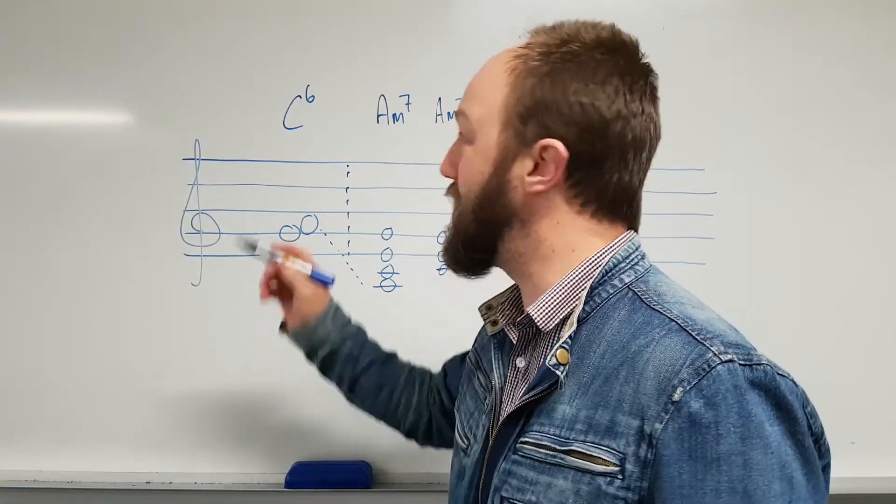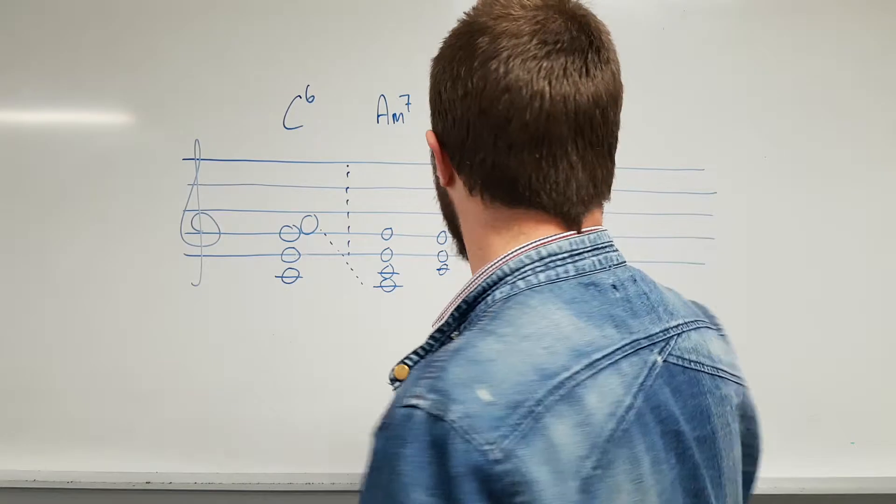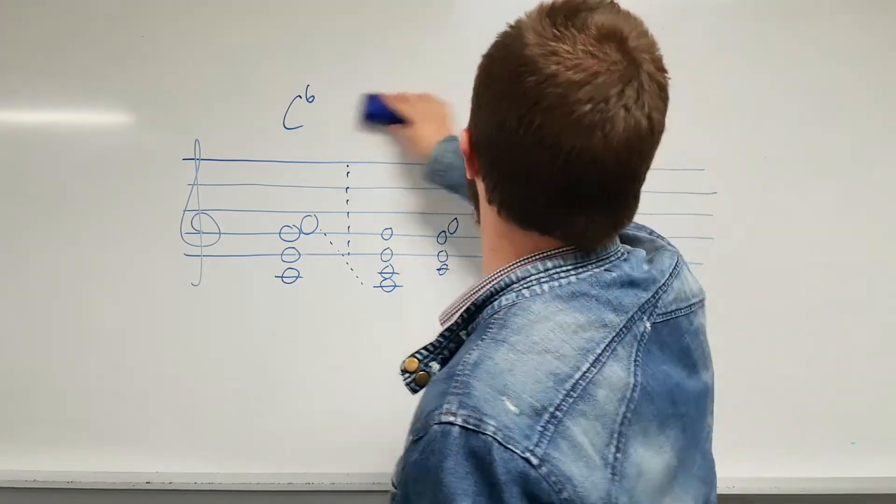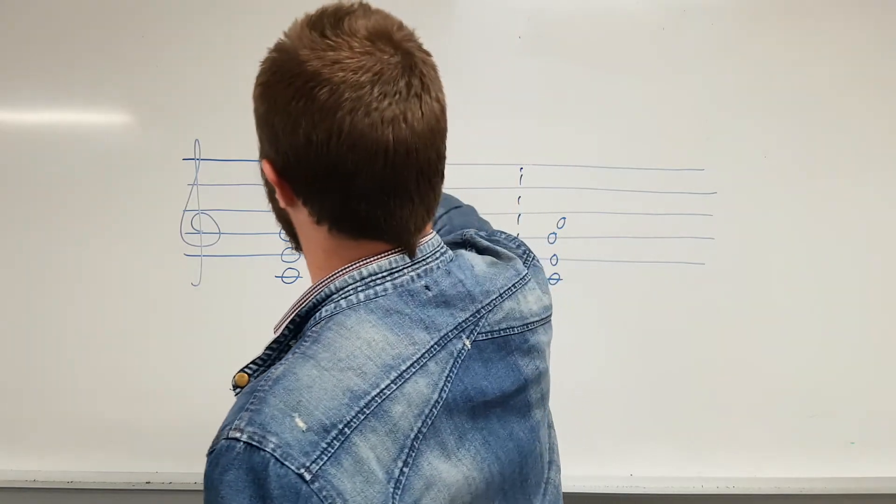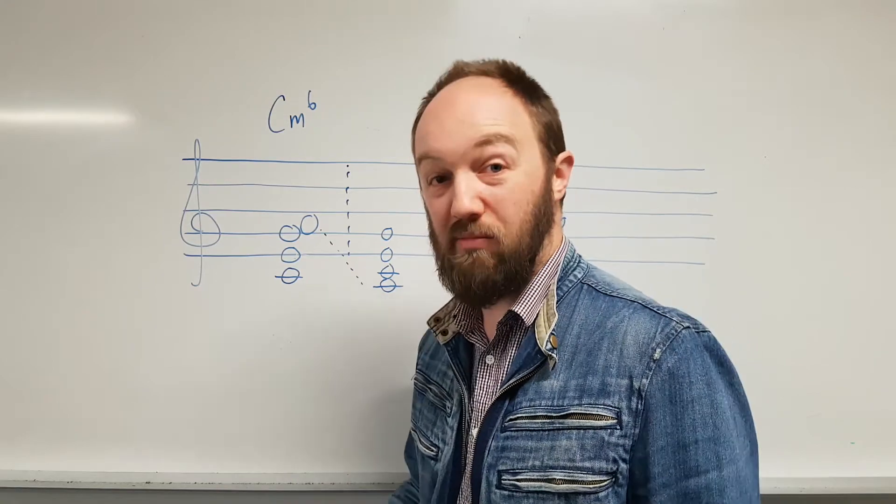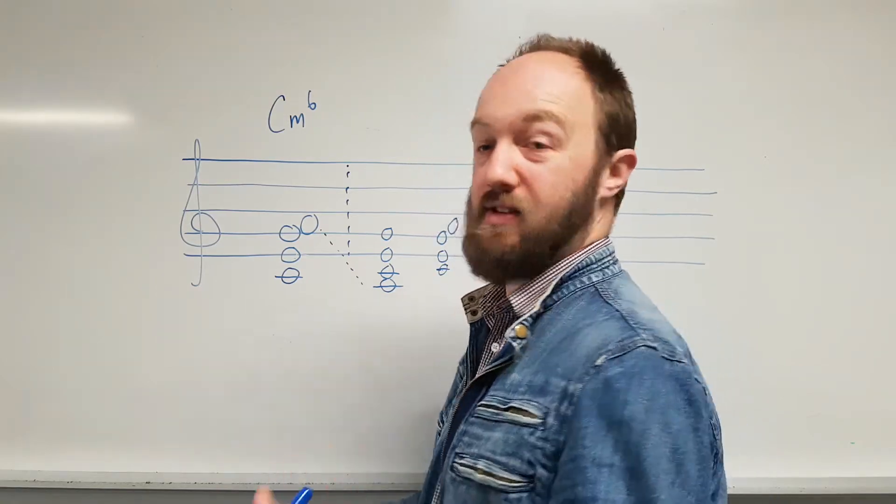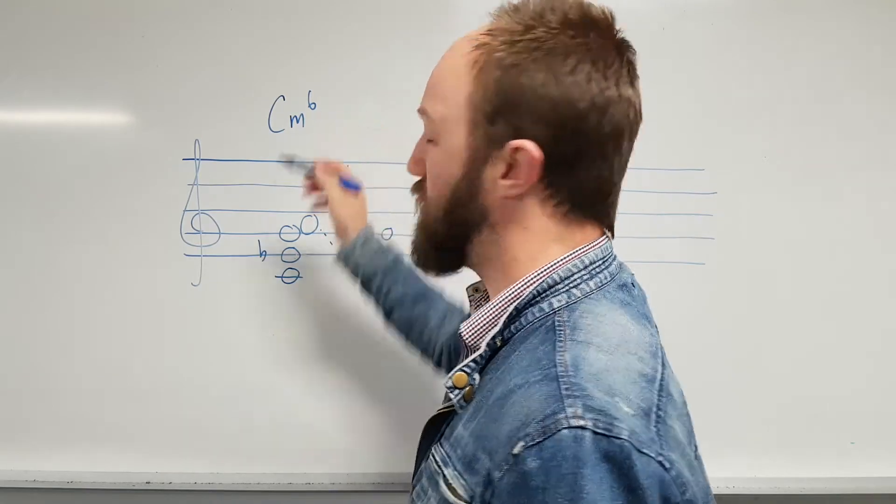Let's have a look at the C minor six versus a half diminished seven chord. So we can pretty much do the same thing, or keep the same basic notes. We have a C minor six now, which is C minor: C, E flat, G, so it's got a flat here, and minor six...